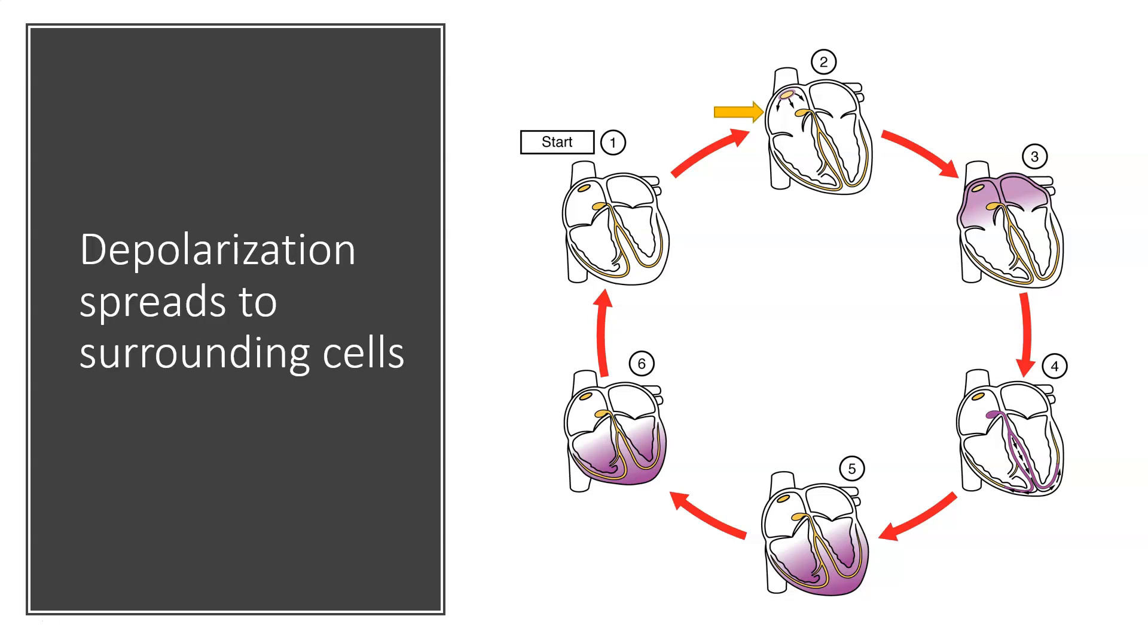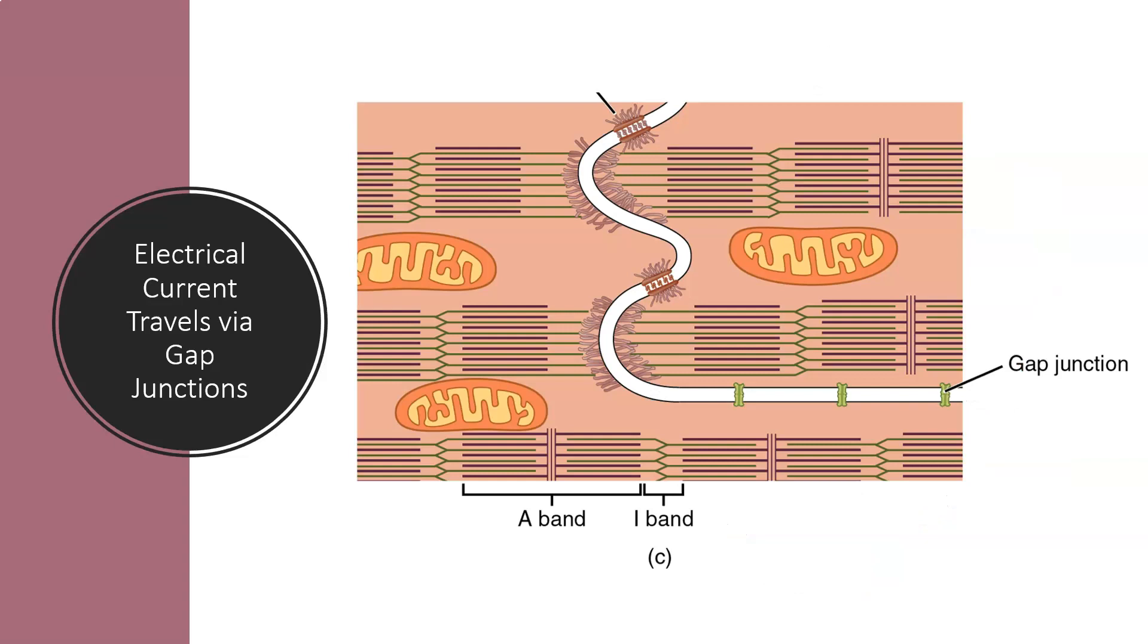This electrical signal is carried by the movement of charged ions. One of the key features of cardiac tissue is the presence of intercalated disks that contain gap junctions.